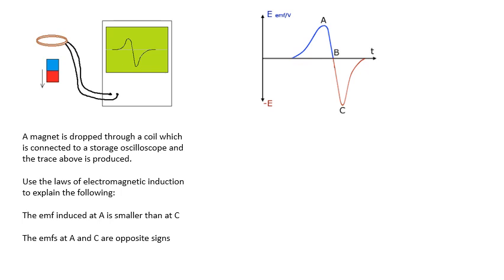You should be familiar with this. This is an experiment we do. You have a coil and you drop a magnet through the coil. And the coil is attached to an oscilloscope. And we get this trace here. So this is voltage against time. This is the induced EMF against time. A magnet is dropped through a coil, which is connected to a storage oscilloscope. And we get this trace. Use the laws of electromagnetic induction to explain why we get a bigger EMF at A than we do at C and why the EMFs at A and C are in opposite directions. The laws of electromagnetic induction, we know what they are. They are Faraday's law and they are Lenz's law.